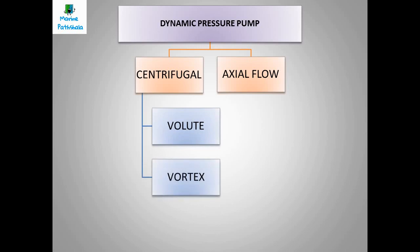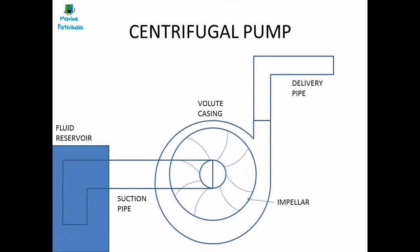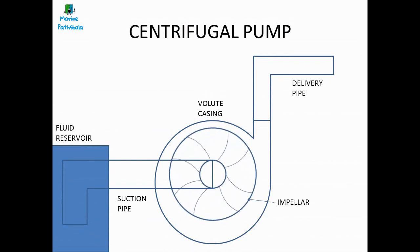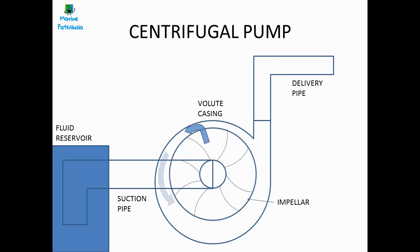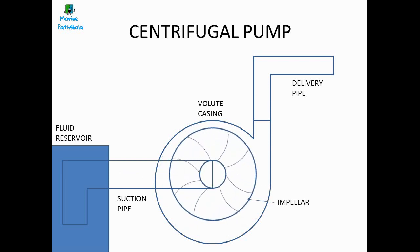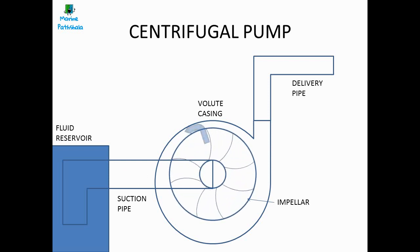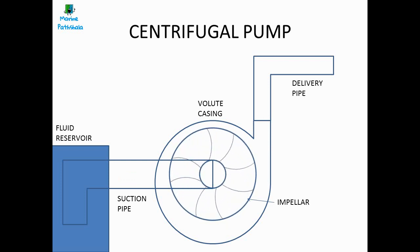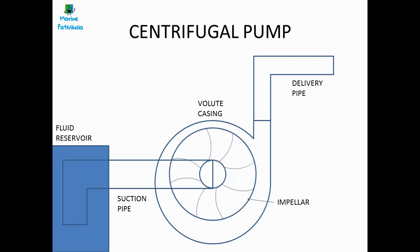Now let us understand how a centrifugal pump works. The pump consists of an impeller and volute casing. Fluid enters the pump body through the eye of the impeller. Due to the rotation of the impeller the fluid is turned, and the volute shape of the pump imparts kinetic energy, and the fluid is discharged. Since the rotation of the impeller does not create vacuum initially, the fluid cannot be sucked into the eye and has to be brought to the eye of the pump — this is known as priming. Hence these pumps are not self-priming pumps.